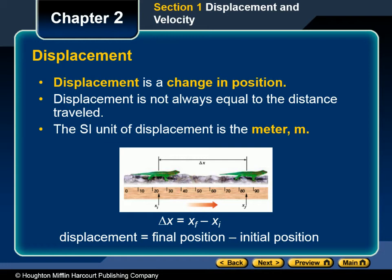Displacement: As any object moves from one position to another, the length of the straight line drawn from its initial position to the object's final position is called the displacement of the object. Displacement is a change in position. The gecko in figure 1.2 moves from left to right along the x-axis from an initial position, x sub i, to a final position, x sub f. The gecko's displacement is the difference between its final and initial coordinates, or x sub f minus x sub i. In this case, the displacement is about 61 centimeters, which is 85 centimeters subtract 24 centimeters. The Greek letter delta before the x denotes a change in the position of the object.